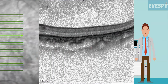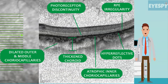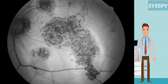OCT is an important imaging modality in cases of CSCR. Features to be noted in this case are increased choroidal thickness, dilated outer and middle choriocapillaries, atrophic inner choriocapillaries, hyperreflective dots in the inner choroid, irregularity in the retinal pigment epithelium, and discontinuity in the photoreceptor layer.